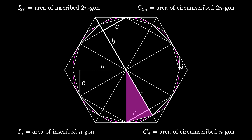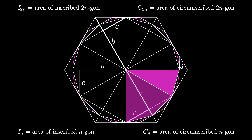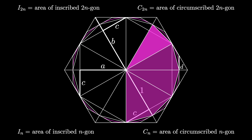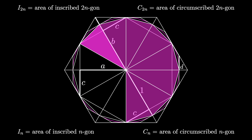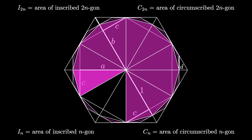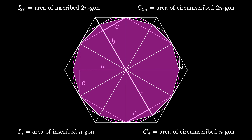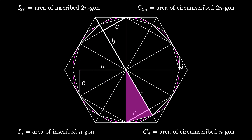To find the area of the inscribed 2n-gon, we use this triangle and rotate it 2n times. The triangle has a base of length 1 and a height of length c. Therefore, the area of the inscribed 2n-gon is 2n times one-half times c, which simplifies to n times c.